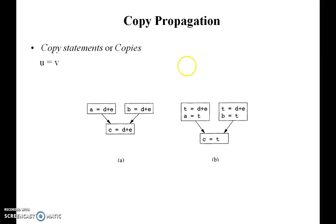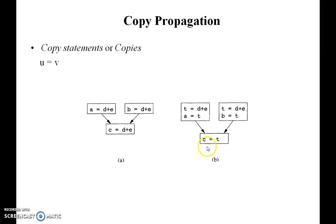One more method is copy propagation. Here, if you look at A is equal to T plus E, and B is equal to D plus E — both values are the same, so we call one value and integrate these two values into this common sub-expression. Also, C is equal to T, where T is equal to D plus E, A is equal to T, B is equal to T, and C is equal to T. This makes the expressions simple.